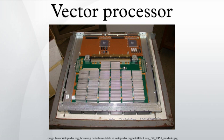Instead of leaving the data in memory like the Star and ASC, the Cray design had eight vector registers, which held 64 64-bit words each. The vector instructions were applied between registers, which is much faster than talking to main memory. The Cray design used pipeline parallelism to implement vector instructions rather than multiple ALUs. In addition, the design had completely separate pipelines for different instructions — for example, addition and subtraction were implemented in different hardware than multiplication. This allowed a batch of vector instructions themselves to be pipelined, a technique they called vector chaining. The Cray-1 normally had a performance of about 80 MFLOPs, but with up to three chains running it could peak at 240 MFLOPs, a respectable number even as of 2002.